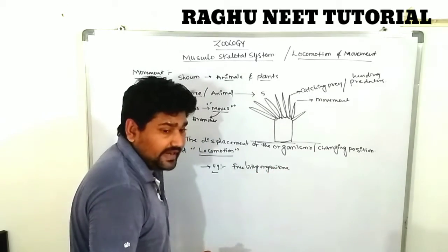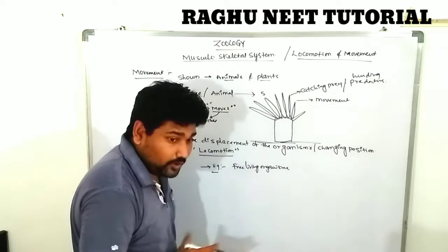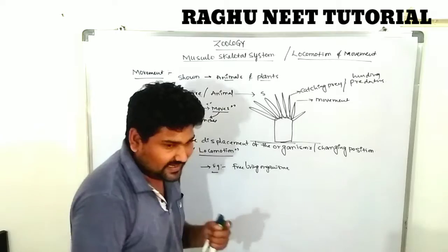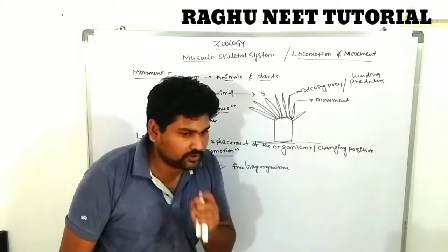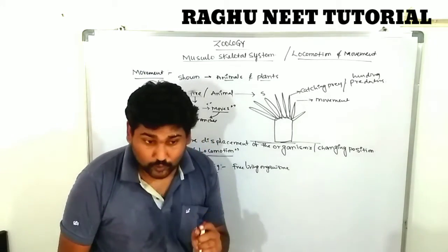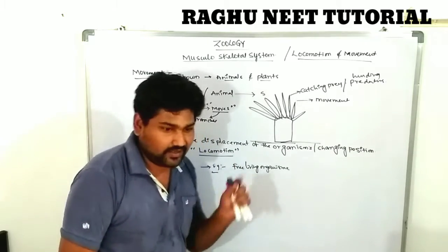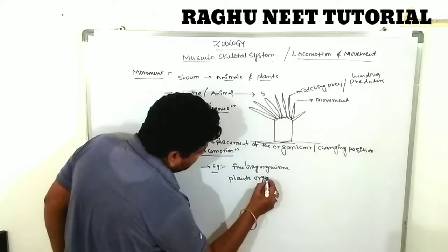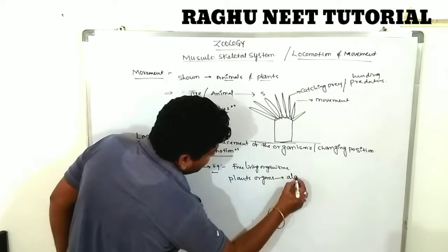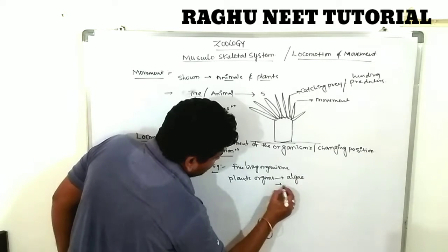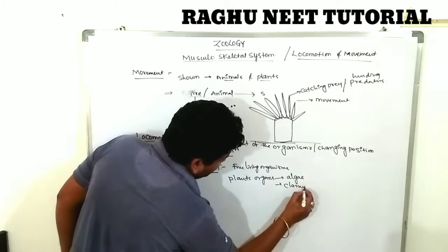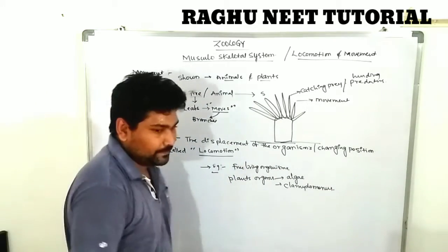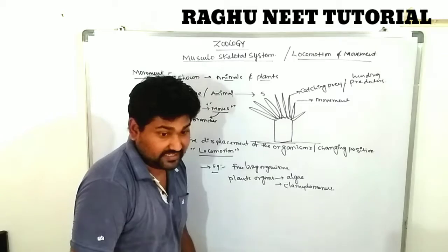Some plants also show free-swimming nature. For example, algae and Chlamydomonas — these come under the plant kingdom but also show movement and locomotion. Some plant organisms like algae and Chlamydomonas show both movement and locomotion.